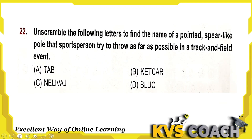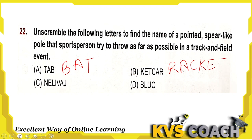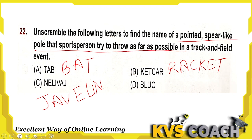Next: unscramble the following letters to find the name of a pointed spear-like pole that a sports person tries to throw as far as possible in a track and field event. First option is bat — used by cricketers. Second is racket — used in badminton or lawn tennis. Third is javelin — J-A-V-E-L-I-N — and javelin throw is the pointed spear-like pole that a sports person tries to throw as far as possible. Fourth is club. Option C, javelin, is the right answer.